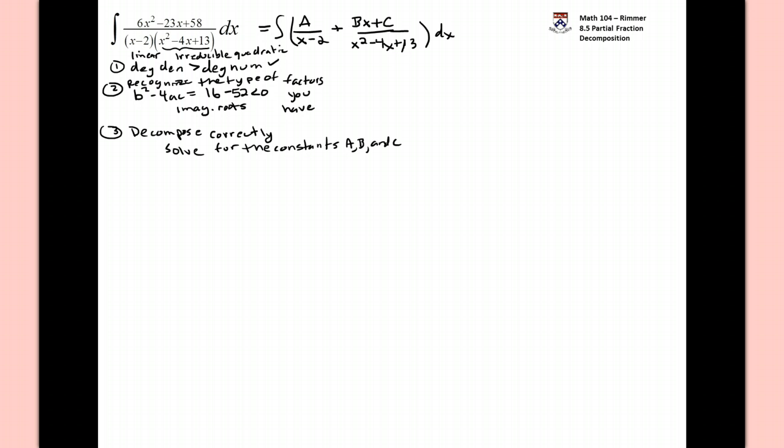Now let's think of putting this back together. If we were to make this one fraction with the common denominator, it would be that the fraction with the a in it would need to be multiplied by the quadratic, x squared minus 4x plus 13. The fraction with the bx plus c in it would need to be multiplied by x minus 2 in order to get the original numerator, 6x squared minus 23x plus 58.